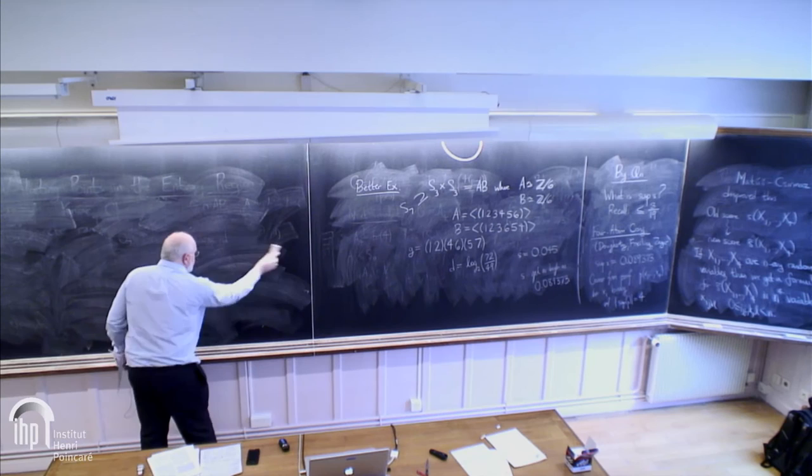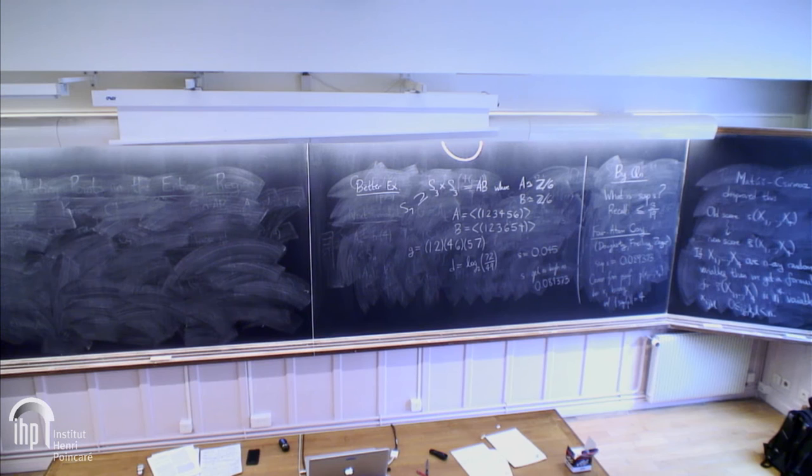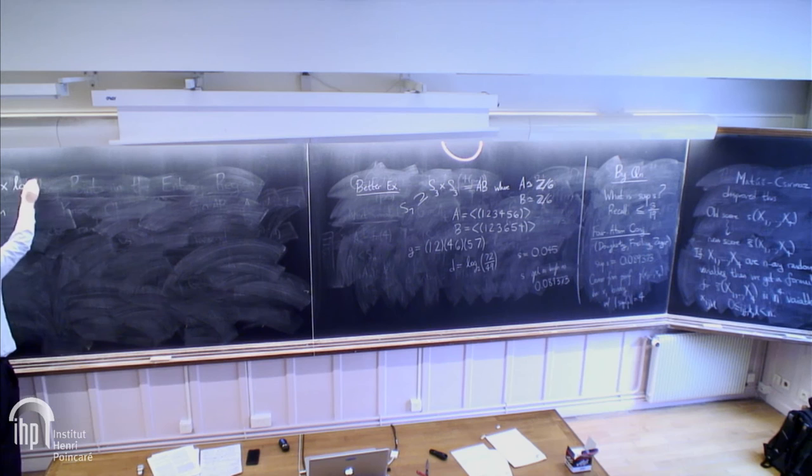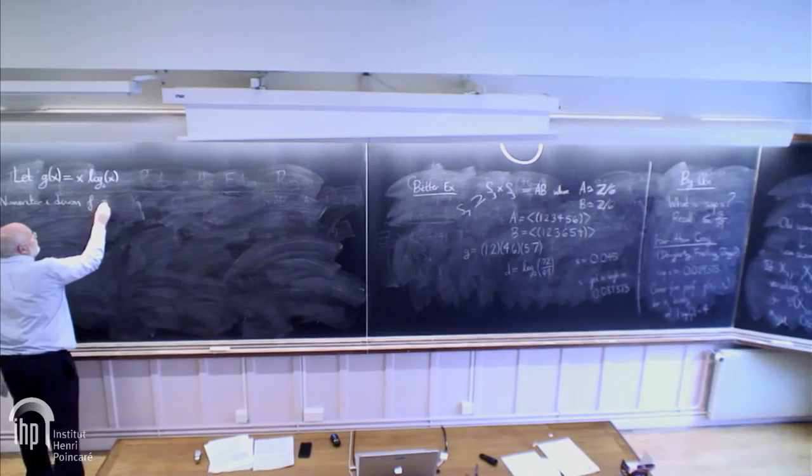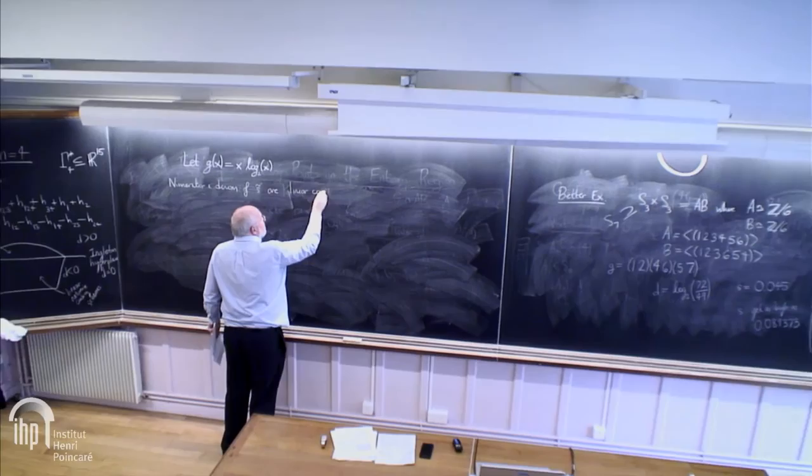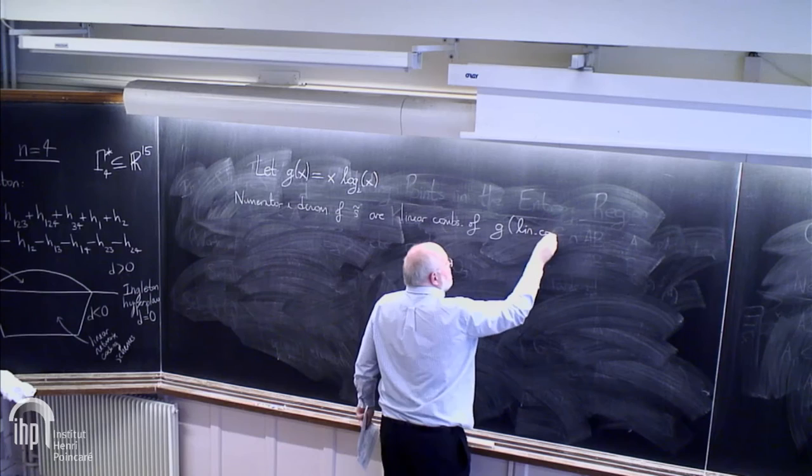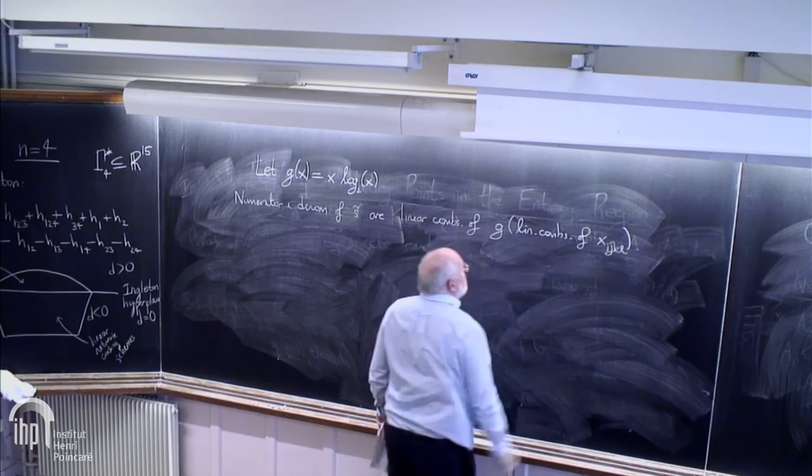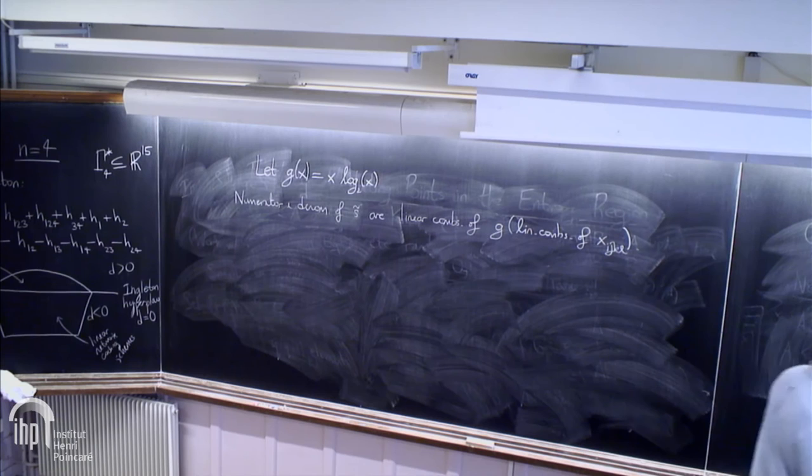This formula is very ugly, but there it is. Just to give you an idea of the shape, let G of X be the function X log X. The numerator and denominator go into linear combinations of G of linear combinations of the X i,j,k,L. Even for N equals 2, it's quite an ugly expression. The difference between this and S is the numerator is the same, but the denominator gets changed slightly.